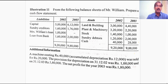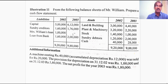Sundry creditor is a current liability. Mrs. Williams' loan is a non-current liability. Loan from bank is also a non-current liability. With regard to Mrs. Williams' loan, you find a decrease in its value — in the opening it was 1 lakh rupees, but at the end it is nil, meaning it has been repaid. Repayment of a non-current liability will come under financing activities as cash outflow. Loan from bank increased from 1,60,000 to 2 lakh rupees, so we have additionally borrowed 40,000 rupees from the bank. This is an inflow under financing activity.